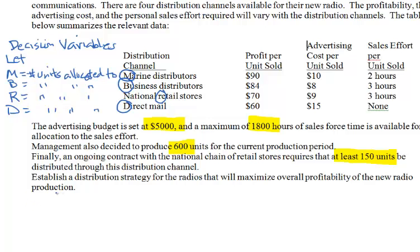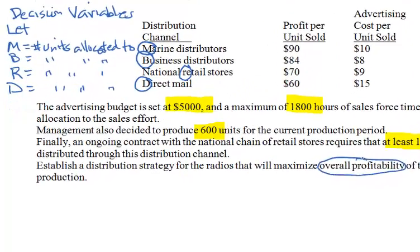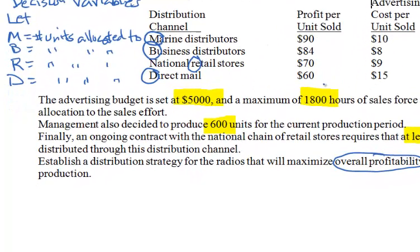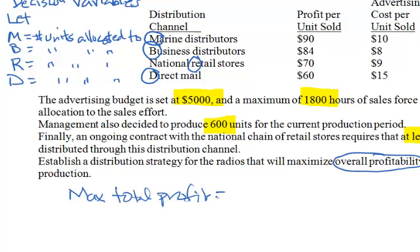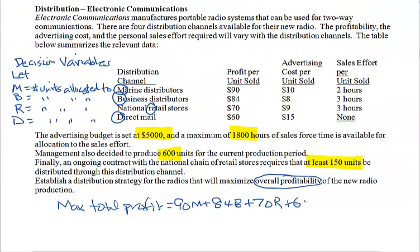Second, the objective function. We want to maximize the overall profit. The profit made from each distribution channel is the unit profit multiplied by the quantity sold — the respective decision variable. For marine distributors the profit is 90 times M, for business distributors 84 times B, and so forth. We want to maximize total profit equal to 90M plus 84B plus 70R plus 60D.